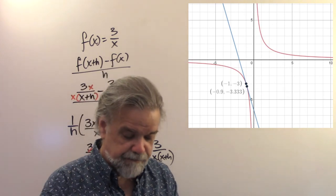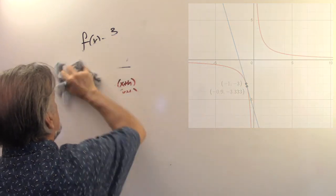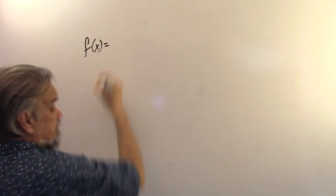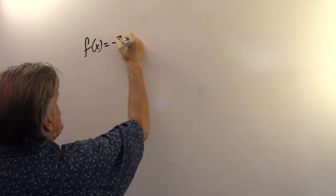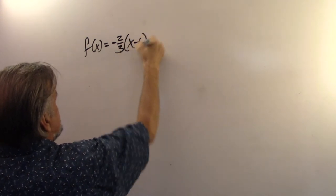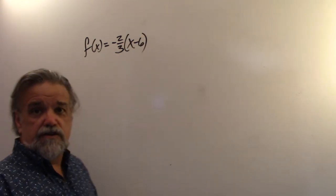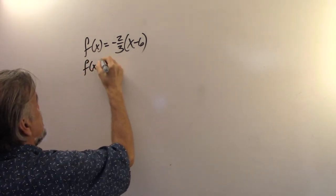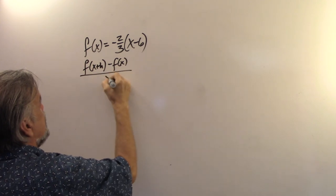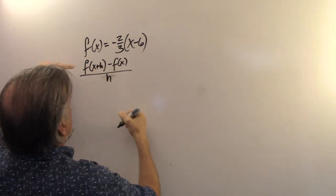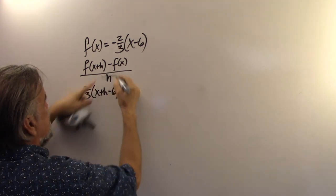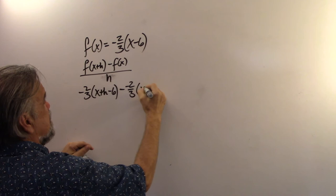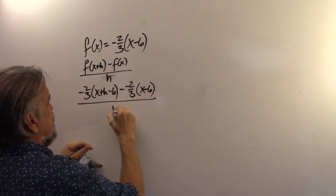Let's do one more. This time, let's have f of x be negative 2 thirds times x minus 6. So difference quotient is f of x plus h minus f of x, everything over h. f of x plus h is going to be negative 2 thirds times x plus h minus 6. And then I'm going to subtract negative 2 thirds times x minus 6. And all of that is over h.